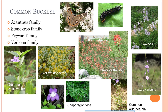Common buckeye is another nymphalid — this is a very, very large group. These guys prefer things in the acanthus, stonecrop, figwort, and verbena families. So Drummond's wild petunia, yellow stonecrop, snapdragon vines, Texas paintbrush, common wild petunia, Texas verbena, and foxglove — the list can really go on for common buckeyes. That's probably why they get the name 'common,' because they're found commonly on a lot of things.